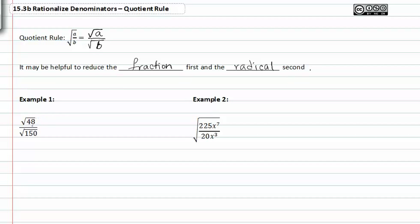Let's try this in example one. Since we have matching indexes in the numerator and the denominator, let's go ahead and rewrite this as one whole fraction under one radical sign.